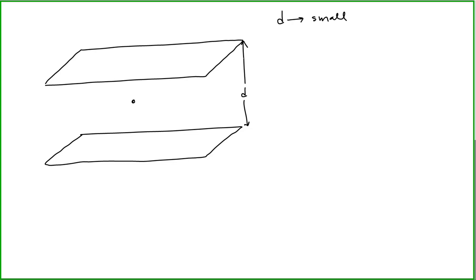With that assumption, we know that these plates will produce a uniform electric field, because we've shown previously that for an infinite plate of charge — an infinite sheet of charge — that infinite sheet of charge has an electric field that follows planar symmetry.